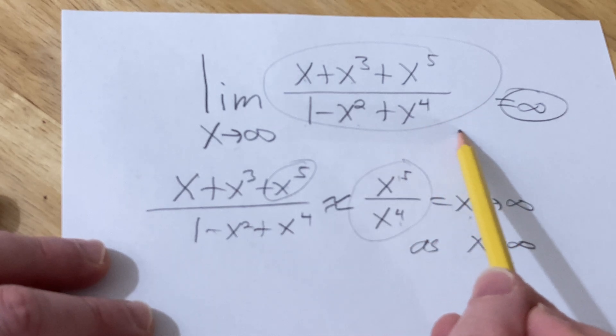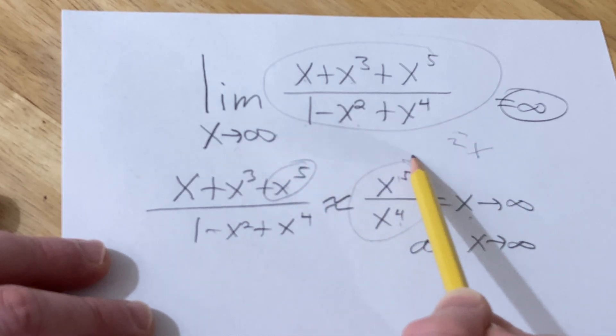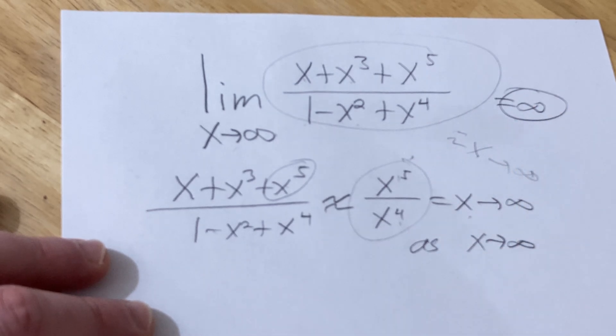So when x is huge, this is approximately equal to x. So as x approaches infinity, this also approaches infinity. And so the answer is infinity.